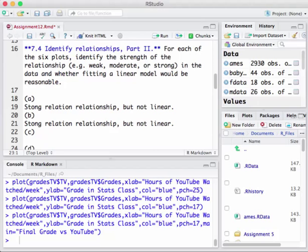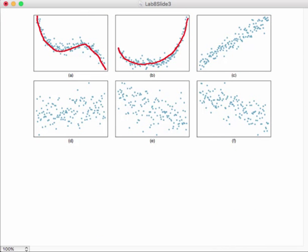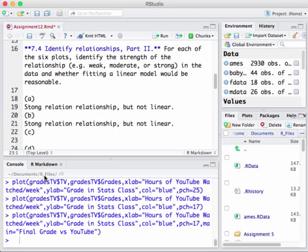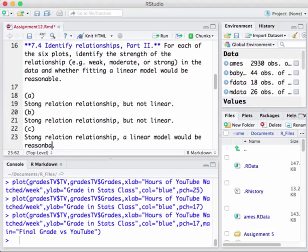Well the third one, lo and behold, we finally came across one that looks like it has a strong relationship, and by Jove, I'm saying that that looks like a nice linear fit. In other words, remember linear means line. We would say this time, not linear, instead I will say reasonable to put a linear fit. A linear model would be reasonable.